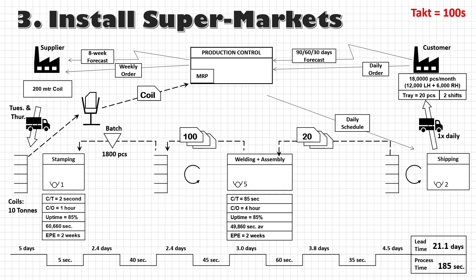Further, we can line up with the supplier to have a daily milk run instead of two trucks per week, so that the supplier can still dispatch a truck with full load, but now the trucks will carry material for different customers. In that case, we will receive material on a daily basis and can further reduce our inventory at the receiving stores.